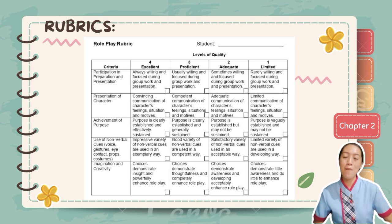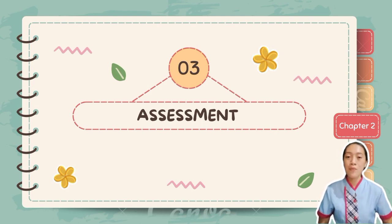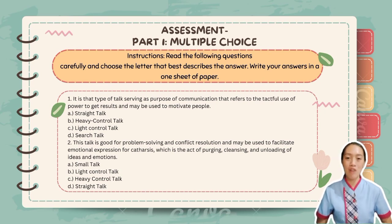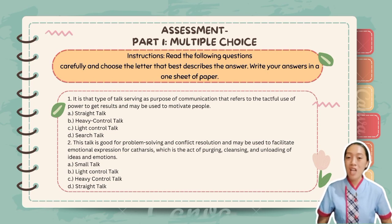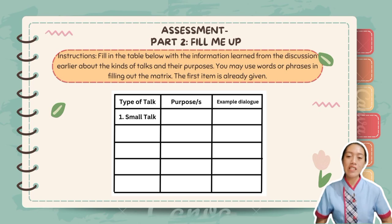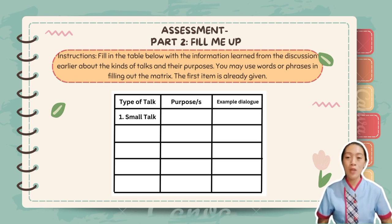Good job everyone for that amazing performance! Now let's evaluate ourselves to see if we really understood the lesson. This assessment is divided into three parts. The first is multiple choice — read the questions carefully and choose the letter that best describes the answer, written on a one-hole sheet of paper, with five items. The second part is called Fill Me Up — fill in the table below with information about the kinds of talks and their purposes, using words or phrases. The first item is already given.